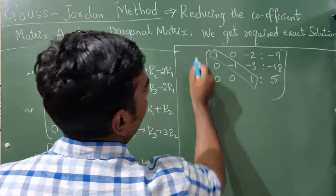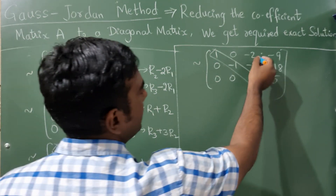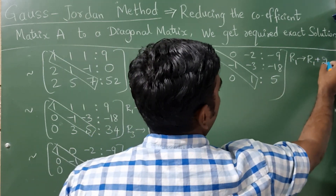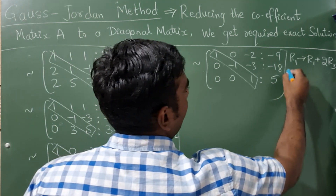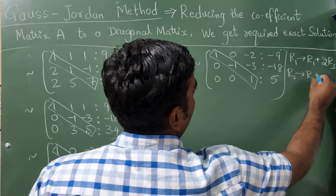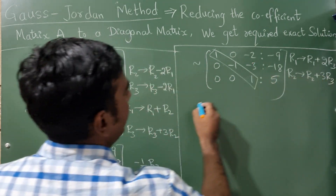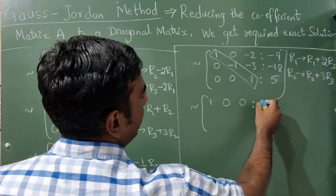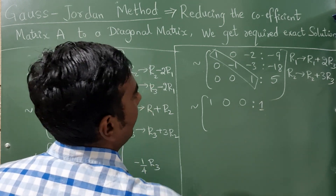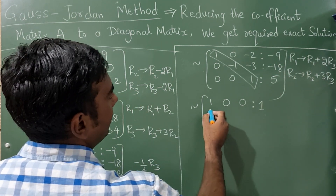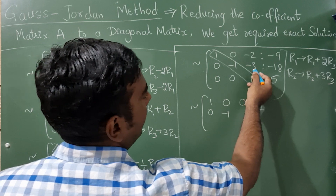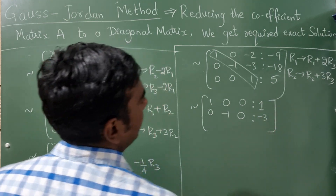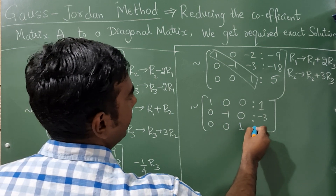Now you have to make these two remaining elements 0. For row 1: R1 + 2·R3 will make that element 0. For R2: R2 + 3·R3 will make that element 0. So the final result: R1 gives 1, 0, 0, 1 (since 5·2 = 10, and 10 - 9 = 1); R2 gives 0, -1, 0 (with -1 result); R3 is 0, 0, 1, 5.